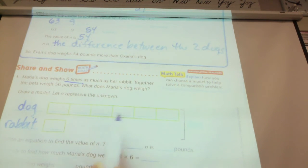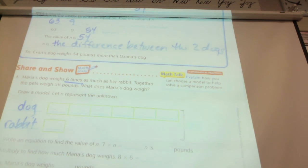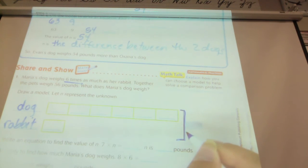And in this case, one, two, three, four, five, six boxes. We have that part. And then do we have a total for both animals? Yeah. What is it? 56. 56.